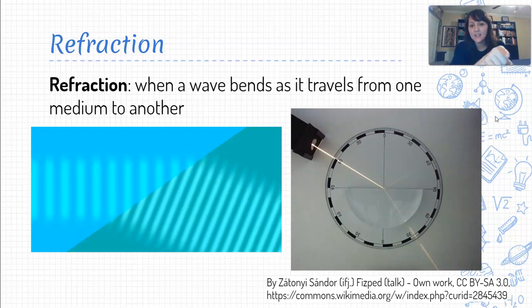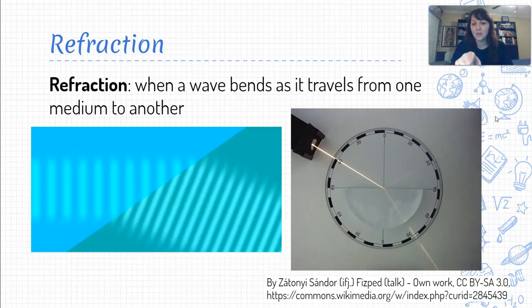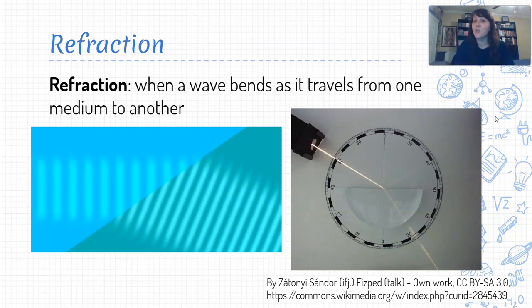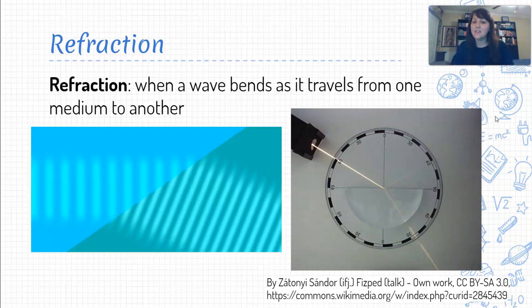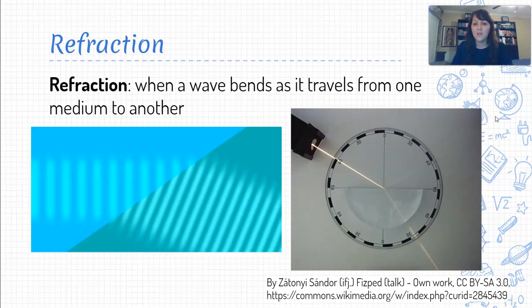And so you can see that as the lights moving in a straight line initially, and then once it hits the block, it's no longer continuing on in the same straight line, it curves downward, it bends downward, and then continues on in a straight line through the acrylic from there.